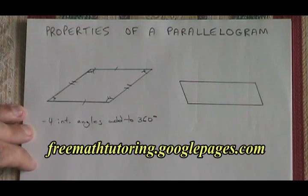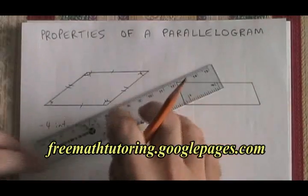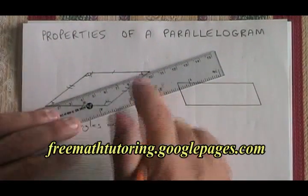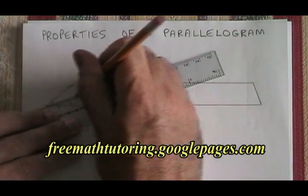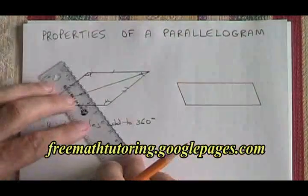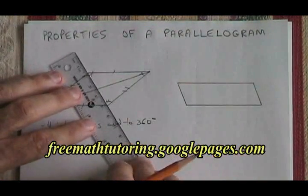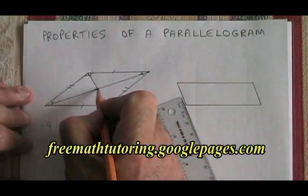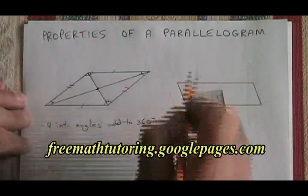It has two diagonals that intersect at their midpoints. I will show that by drawing the diagonals. There's one of the diagonals, and here's the other. This is the midpoint of both the short diagonal and the long one.